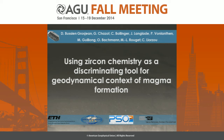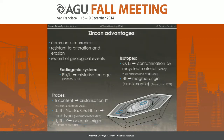As you probably know, for a few years now, provenance analysis has integrated zircon to track eroded sources. Zircon is an interesting tool due to its large occurrence and also to its high resistance to alteration and erosion, making it really interesting for sediments.